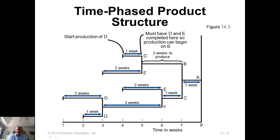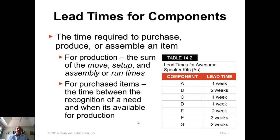The overall lead time is 7 weeks. If you simply add the lead times, you'll get 3 plus 5 plus 7 — 12 weeks. But in fact, the overall lead time is only 7 weeks because some of those weeks are done in parallel. You cannot simply add up all the lead times and say that is the overall lead time for producing the final product A.